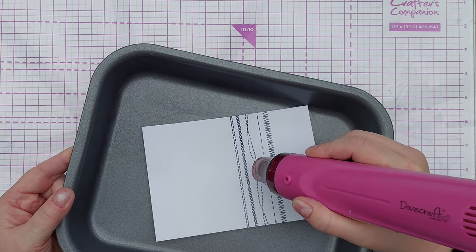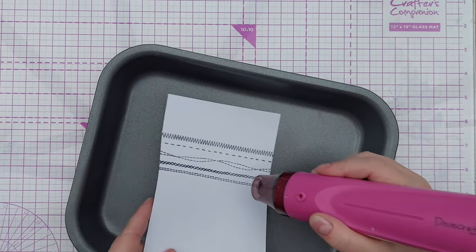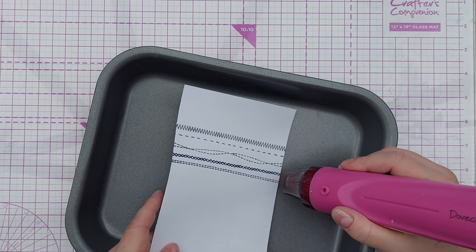Speaking of embossing powder I dipped my card panel into clear embossing powder and then melted it with my heat gun and this gave a lovely raised shiny indigo pattern.